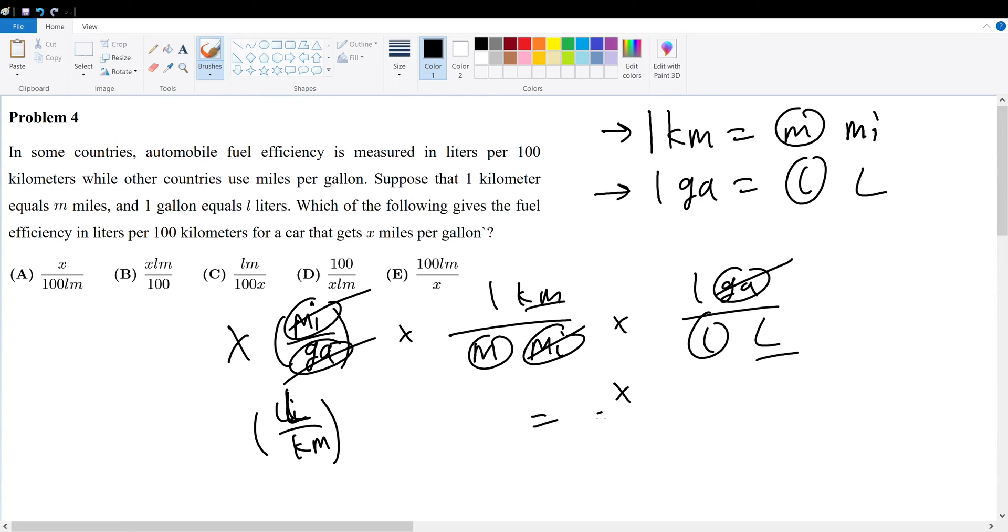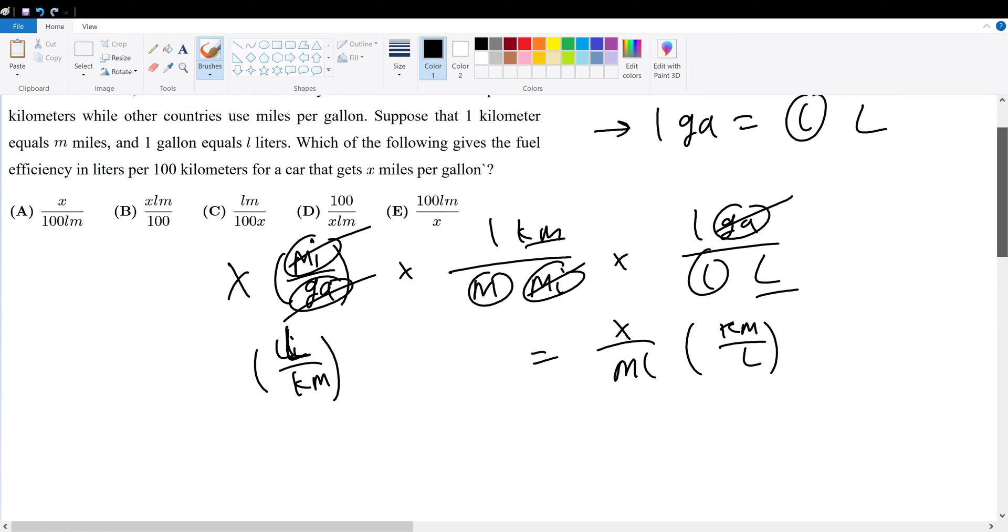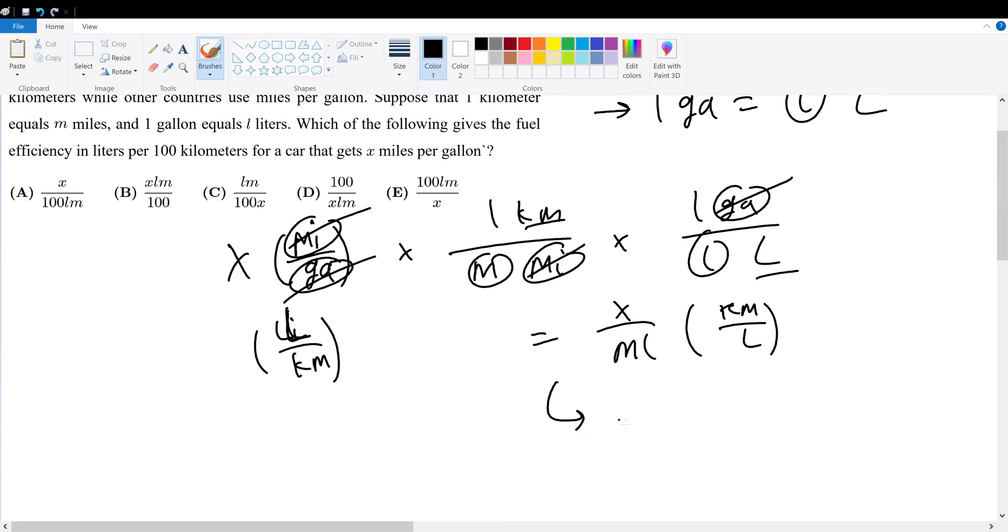So this is x over ml of kilometers per liter. But we're trying to find it in terms of liters per kilometer or the basic units. So take the reciprocal of this. This becomes ml over x liters per kilometer.